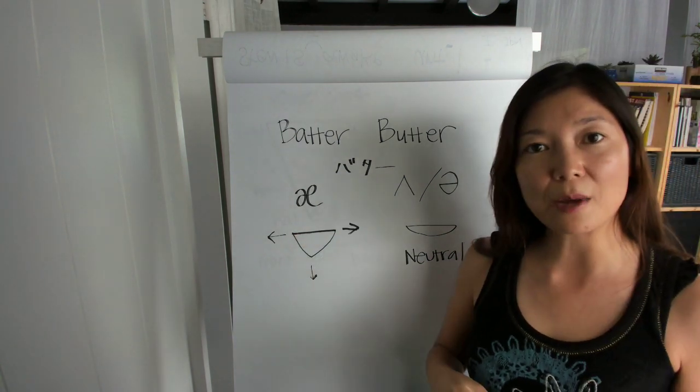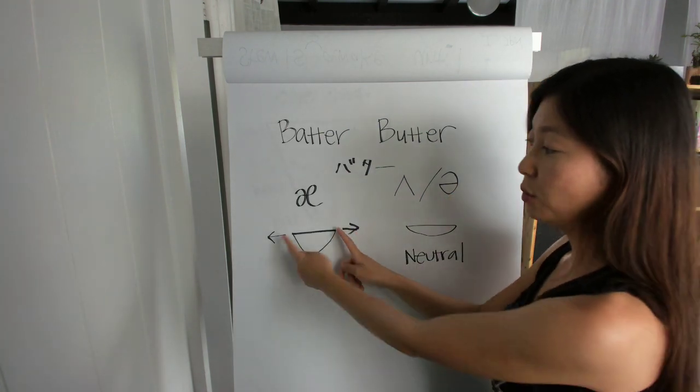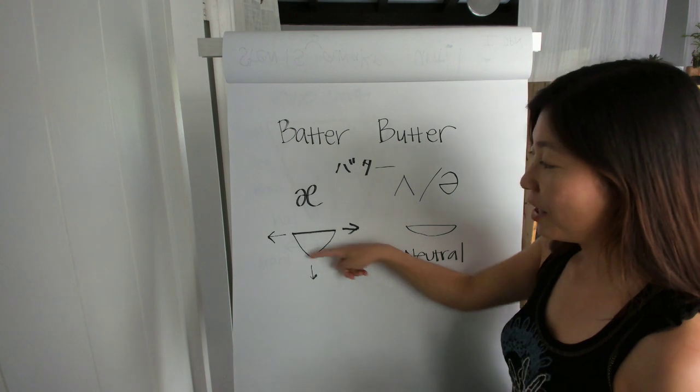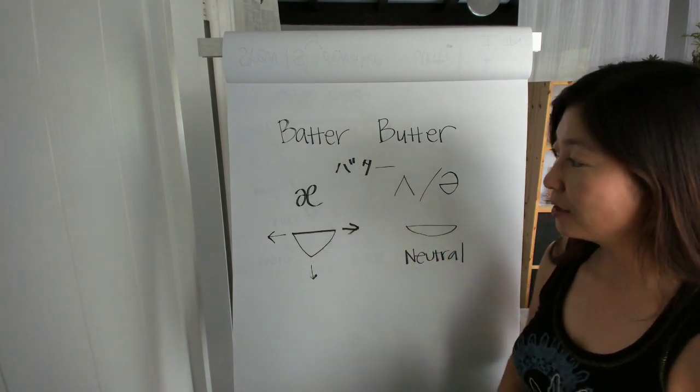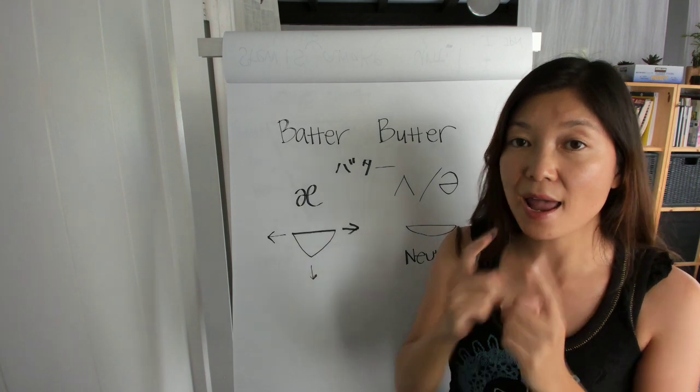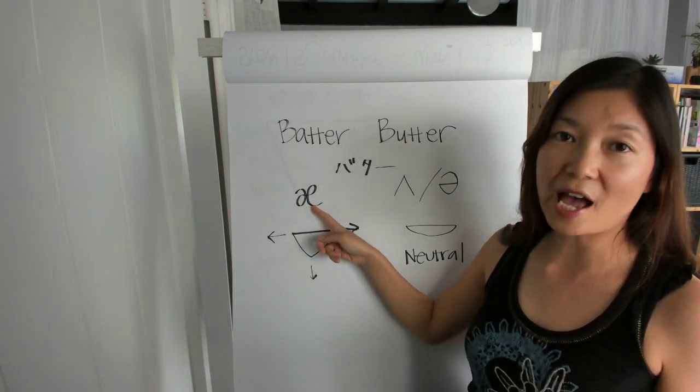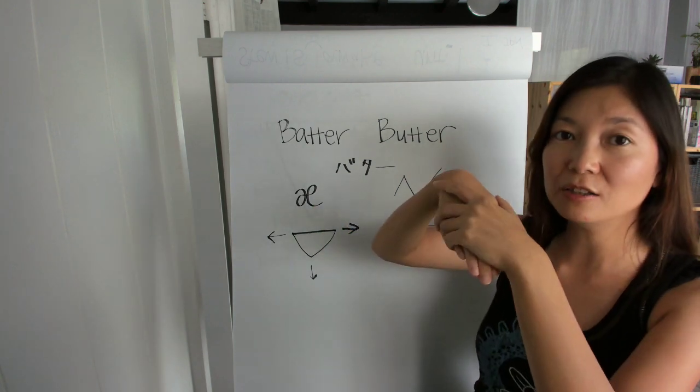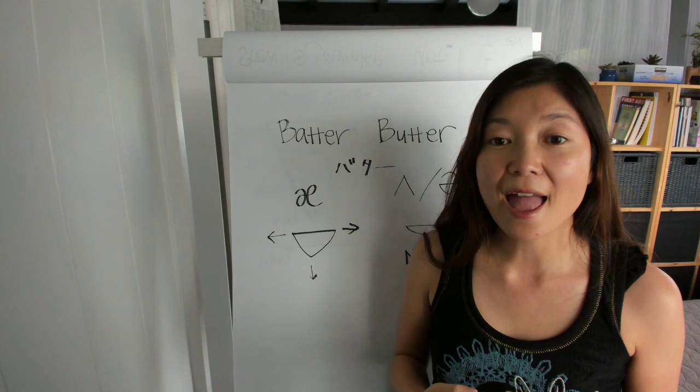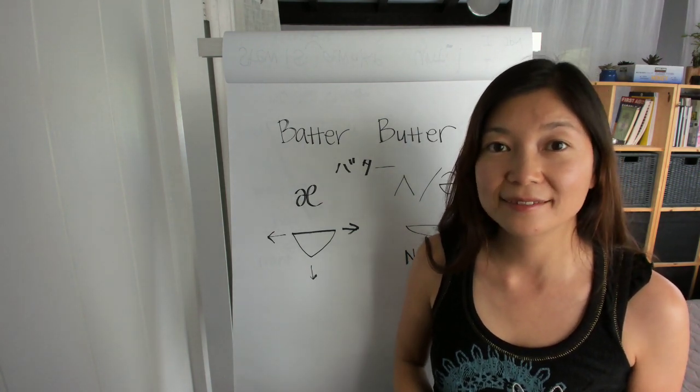So how to do it is you want to make your mouth kind of a triangle shape and then move your lips sideways and open your mouth. So you make a triangle shape and make sure that your tongue is flat. This is called a flat A because your tongue becomes flat so that you can see your tongue.